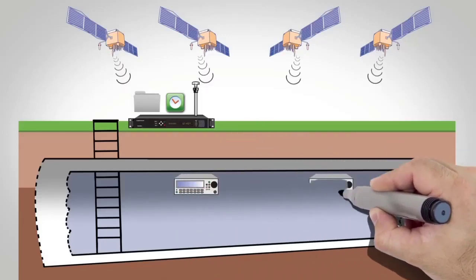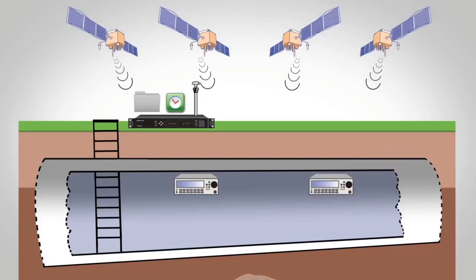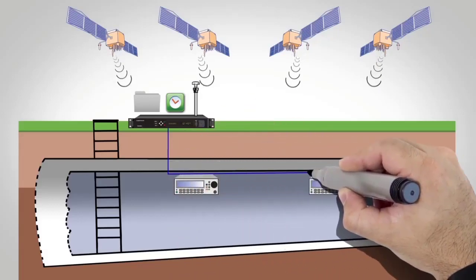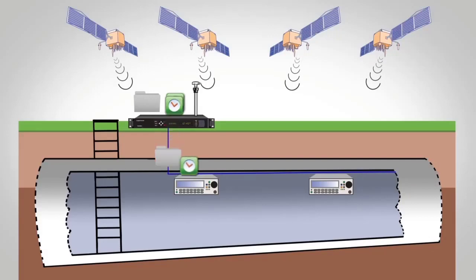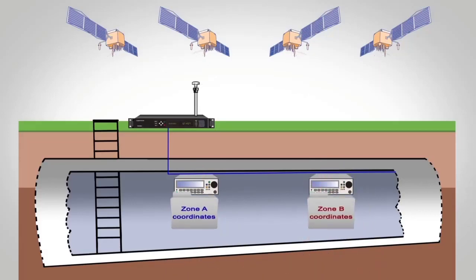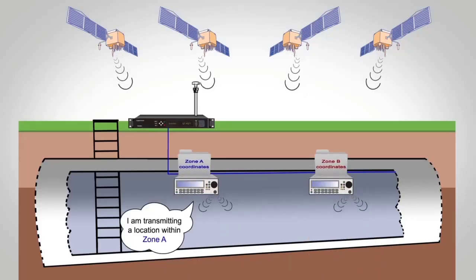Then the above-ground receiver transmits this data across an existing network connection to any number of Spectricom's GPS simulators. Each simulator is pre-configured to transmit GPS signals corresponding to a location within its zone, based on its knowledge of the exact time and satellite orbits.